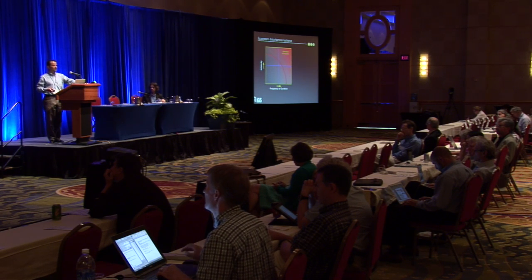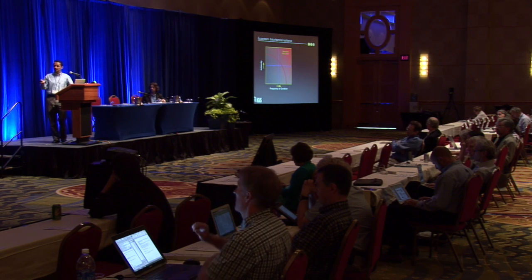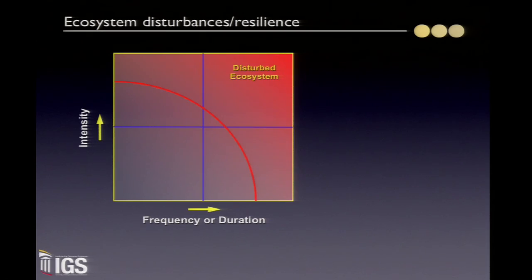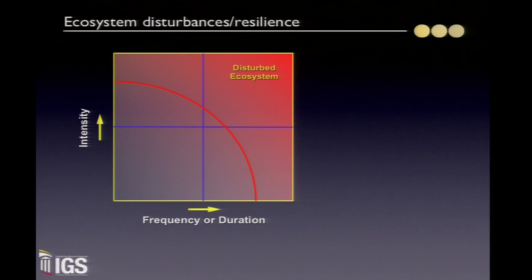How can you model this — the concepts of disturbance, resistance, and resilience? Disturbances can have certain levels of intensity, frequency, and duration, and the combination of those two really defines the disturbance. A community's resilience can be defined by a threshold line — a community can be disturbed and change in structure or function while staying within that space. But as soon as the intensity and frequency combination is high enough, the community can move into a disturbed state — one of those other valleys.